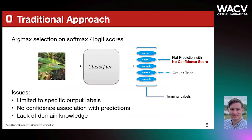The naive approach to applying machine learning to this problem would be to argmax-select the output softmax scores and consider this as the classification. However, this method has issues: we can only provide specific output labels with no associated confidence, and domain knowledge is absent. Such issues inhibit the widespread adoption of machine learning in the agricultural community.